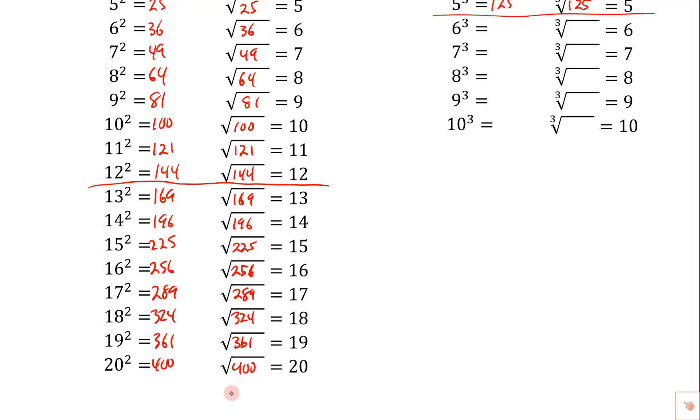Again, notice that the square root of 4 would be 2, and then the square root of 100 would be 10, so 2 times 10 would be 20 there.